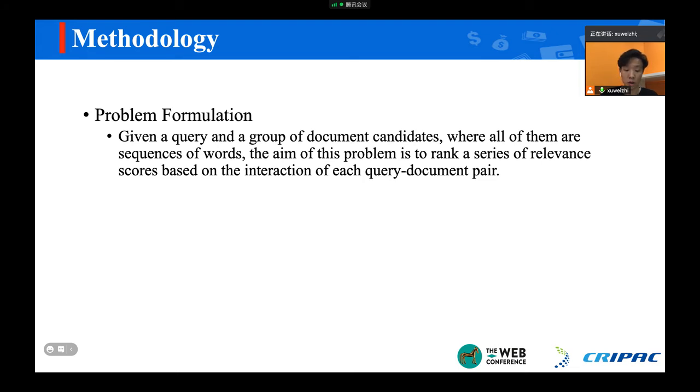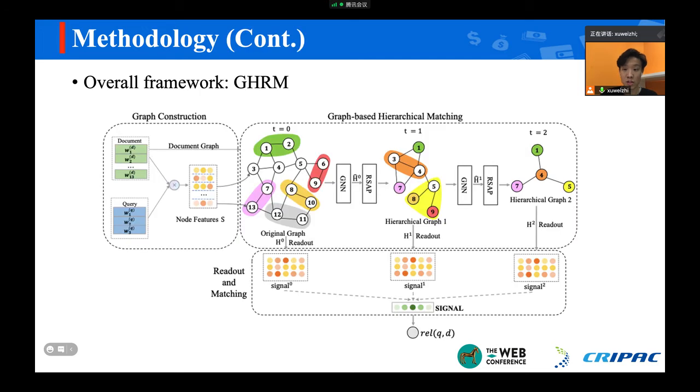Then I will show our solution named GHRM. Here is the overall framework. Our framework is mainly divided into two parts. The first part is the graph construction. The second part is the graph-based hierarchical matching. It includes a graph representation learning layer and a graph hierarchical signal modeling unit named RSAP based on the attention graph pooling technique. At each step, the filtered representations will be read out and finally concatenate the overall signal for prediction.